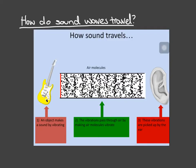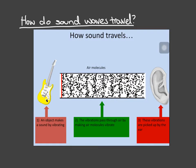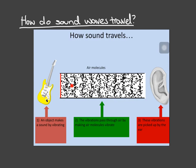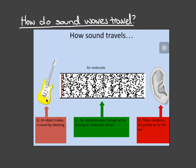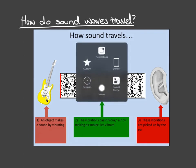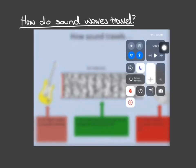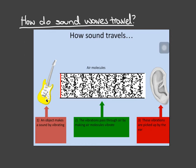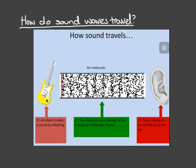Let's now look at how sound waves travel. In this scenario, we've got a guitar and we pluck the strings. The strings vibrate and those vibrations travel through the air to the ear. If you look at a little particle here, it's oscillating backwards and forwards — this is the direction of energy travel, linking back to the idea of longitudinal waves.